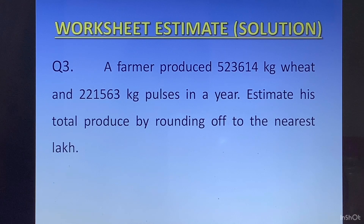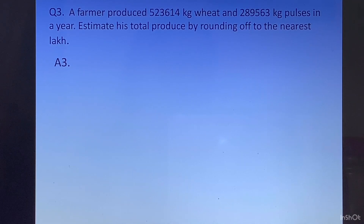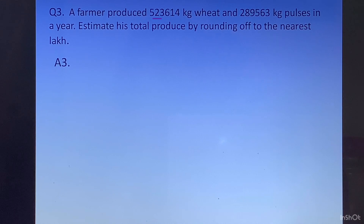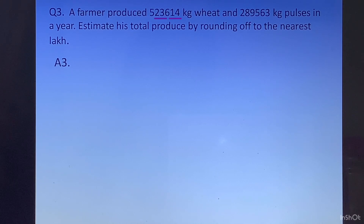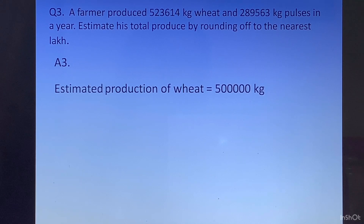Question 3: A farmer produces 523614 kg of wheat and 221563 kg of pulses in a year. Estimate his total production by rounding off to the nearest lakhs. The farmer produced 523614 kg of wheat. We look at the digit at the 10,000 place in this number, which is 2. Since 2 is less than 5, the digit at the lakhs place will not change; it will remain as 5. All the digits on the right will get converted to 0. Thus, the estimated production of wheat is equal to 5 lakh kg.